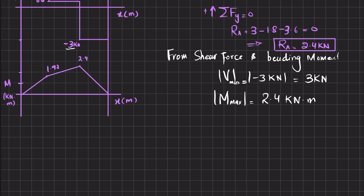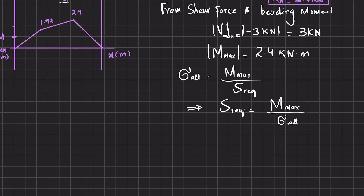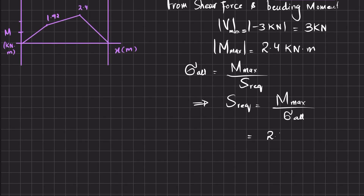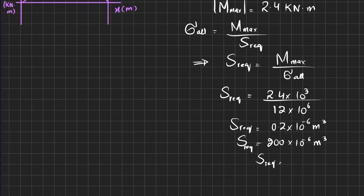We use the bending stress formula: allowable stress = maximum bending moment divided by required section modulus. So required section modulus S = M_max / σ_allowable = (2.4 × 10³ N·m) / (12 × 10⁶ Pa) = 0.2 × 10⁻³ m³ = 200 × 10³ mm³.